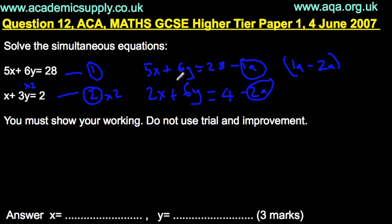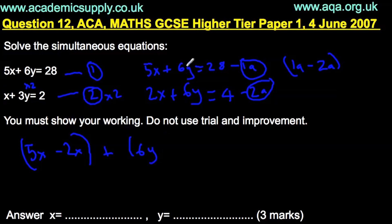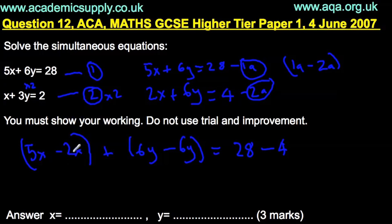If we do 1a minus 2a, we get 5x minus 2x in brackets, plus 6y minus 6y. The 6y terms cancel to zero. So we're left with 3x equals 28 minus 4, which is 24. So 3x equals 24.